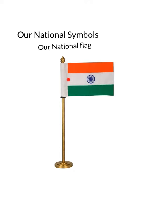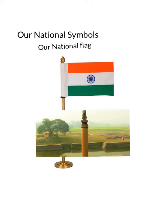The middle band is white and has the Dharma Chakra in the center. This band stands for peace and truth. The Dharma Chakra is a blue wheel with 24 spokes, and it is inspired by the wheel that appears on the Ashoka pillar at Sarnath.